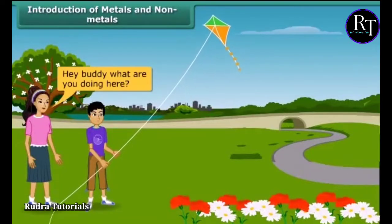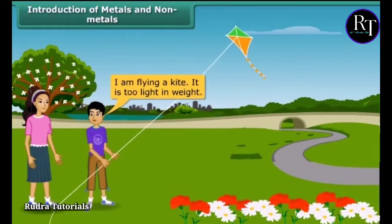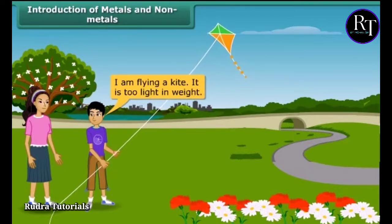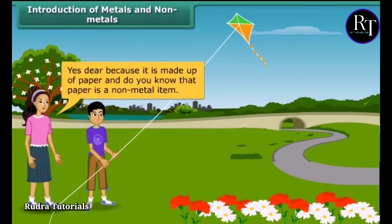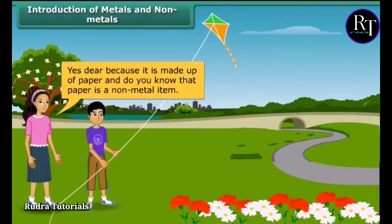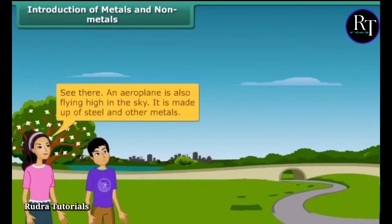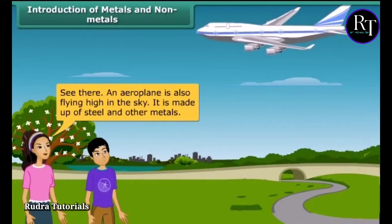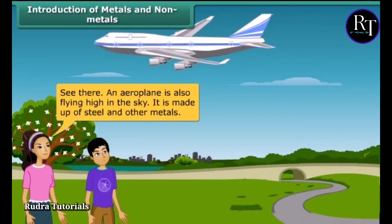Hey buddy, what are you doing here? I am flying a kite — it is too light in weight. Yes, because it is made up of paper, and paper is a non-metal item. See there — an airplane is also flying high in the sky. It is made up of steel and other metals.